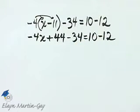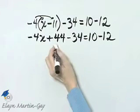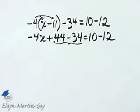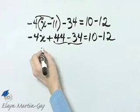Now, let's see if we can combine any like terms on each side of the equation. Notice on the left side of the equation, these are like terms, and 44 minus 34 is 10.